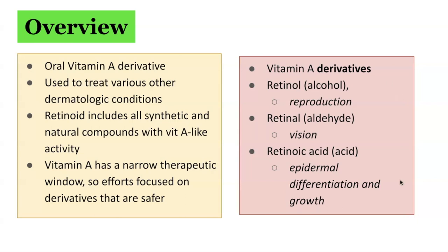In terms of vitamin A derivatives, they predominantly comprise retinol, retinal, and retinoic acid. Retinol is an alcohol — you can remember this because retinol ends in O-L, as does alcohol, and it's involved in reproduction. Retinal ends in A-L, so it's an aldehyde, and with 'retina' in the word, it's important in vision. Retinoic acid is involved in epidermal differentiation and growth.